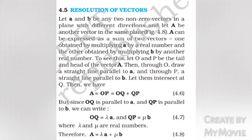Resolution of vectors. Let A and B be any two non-zero vectors in a plane with different directions and let vector E be another vector in the same plane. Vector E can be expressed as a sum of two vectors: one obtained by multiplying vector A by a real number, and the other obtained by multiplying vector B by another real number.